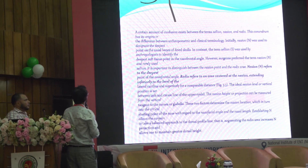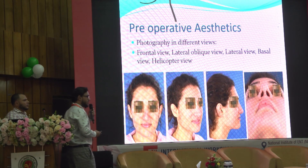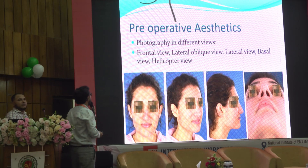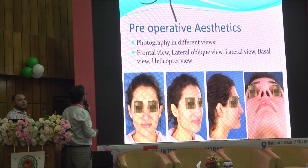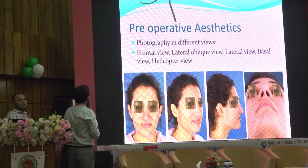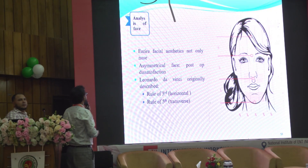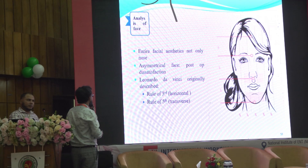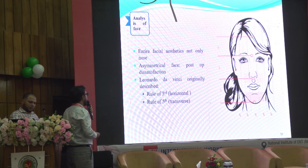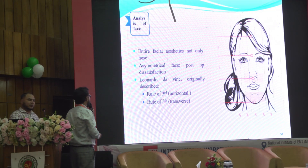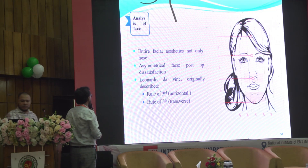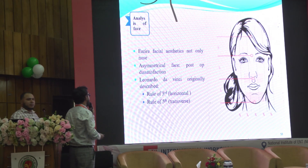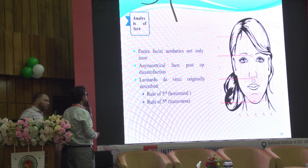In preoperative aesthetic photography, different views are taken: frontal view, lateral oblique view, lateral view, basal view, and worm's-eye view. Facial aesthetics — not only the nose — should be assessed before surgery because facial asymmetry in the postoperative period may cause patient dissatisfaction. The face is described using the rule of thirds and rule of fifths.